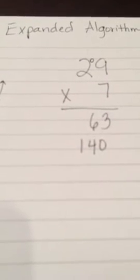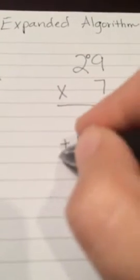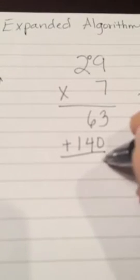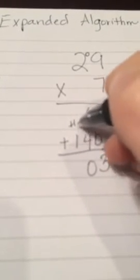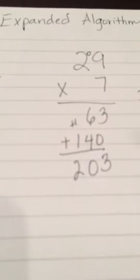And now we have our two parts to our product. To get our total product, all we have to do is add those together. 3 plus 0 is 3. 6 plus 4 is 10. I'm going to regroup here. And 1 plus 1 is 2. 203.